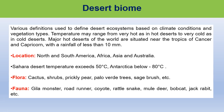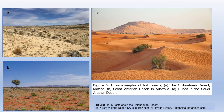Gila monster, roadrunner, squirrels, rattlesnakes, mule deer, bobcat, and jack rabbit are some living species found in that biome. Figures A, B, and C are pictures of hot deserts: the Sonoran Desert in Mexico, Great Victorian Desert in Australia, and dunes in the Saudi Arabian Desert.